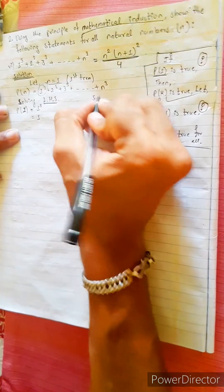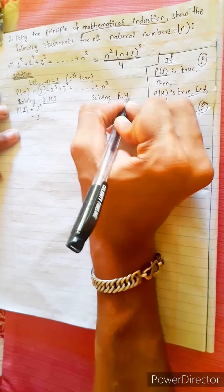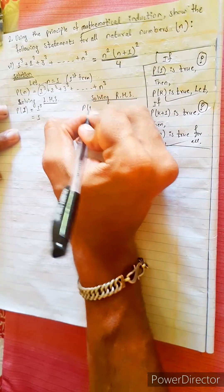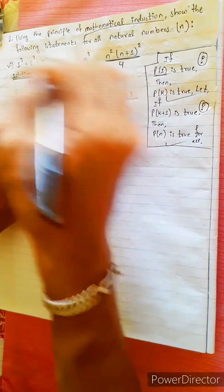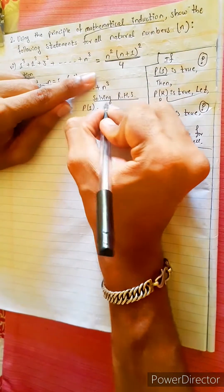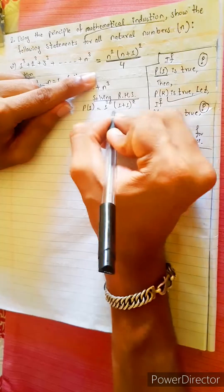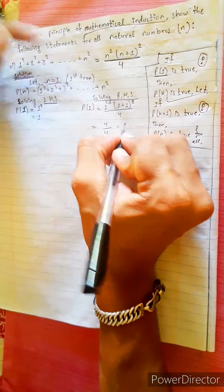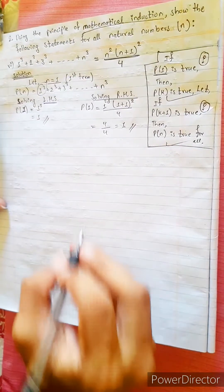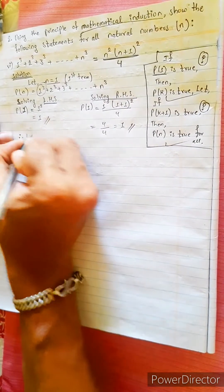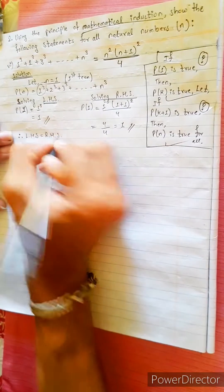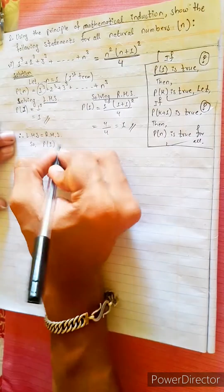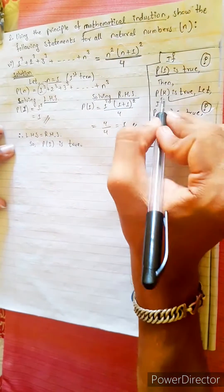LHS is solved. Solving RHS: p(1) equals to RHS — 1 squared into (1 plus 1) squared divided by 4. 1 plus 1 is 2, 2 squared is 4, 4 by 4 equals to 1. LHS equals to RHS. Therefore p(1) is true.